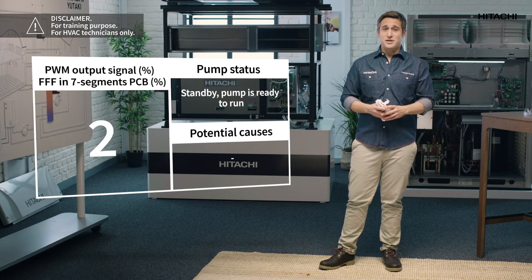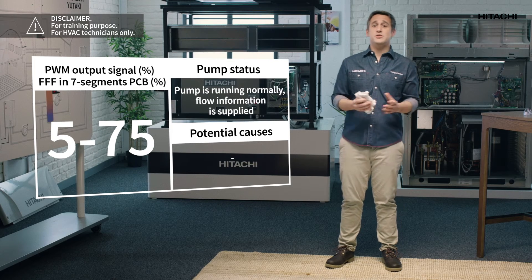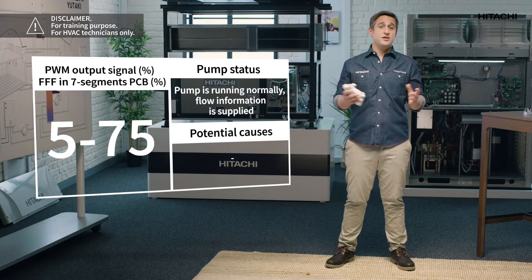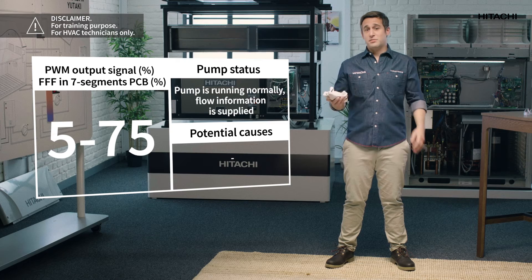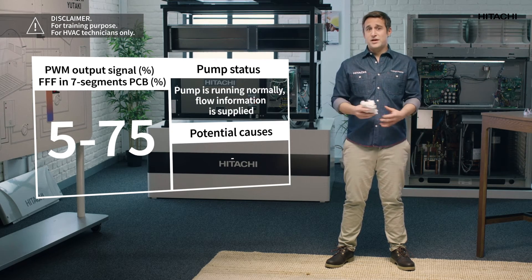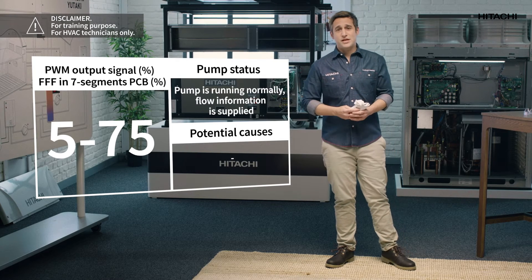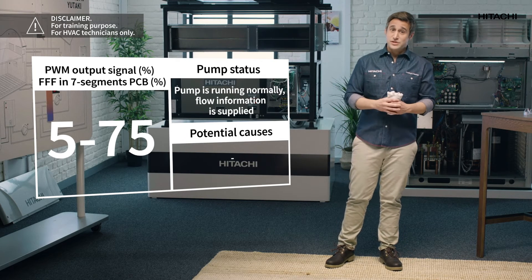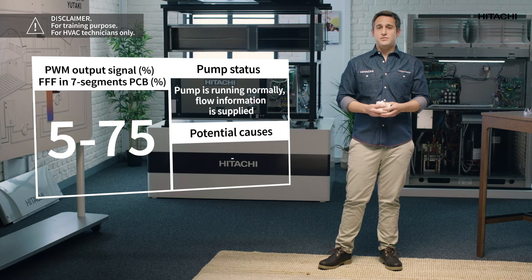A value of 2 means that the pump has stopped. If the value is between 5 and 75, it means that the operation is normal and flow rate information is sent to the PCB. For example, 5 is for the minimum flow rate and 75 is for the maximum flow rate. Outside of 5 and 75, the values are fixed.